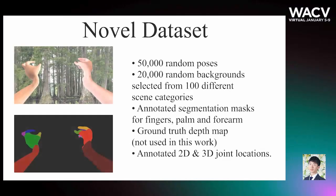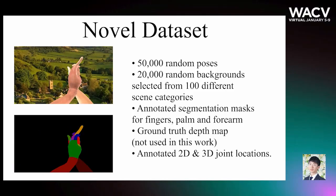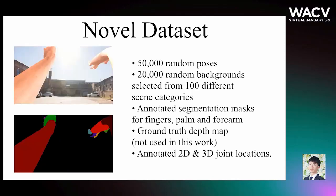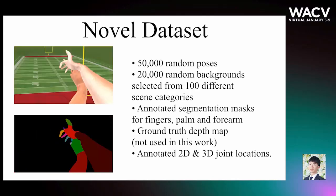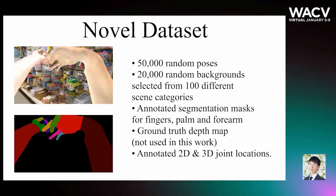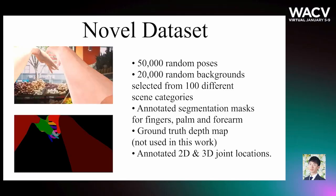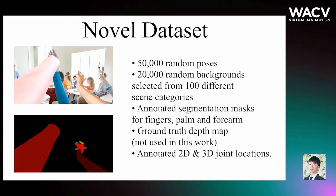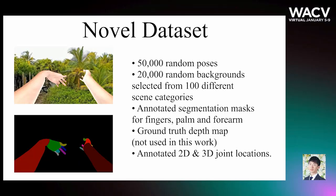The dataset we created contains 50,000 random poses, 20,000 random backgrounds selected from 100 different image categories, segmentation masks for the fingers, palm, and forearm of both hands, and annotated 2D and 3D joint locations.